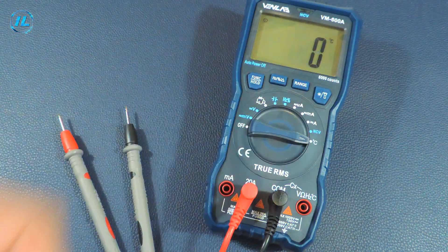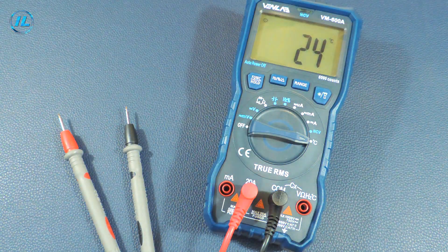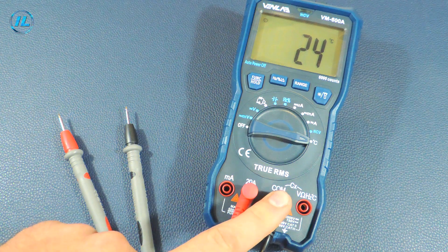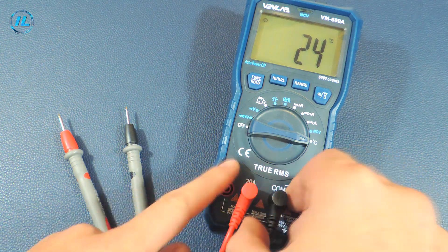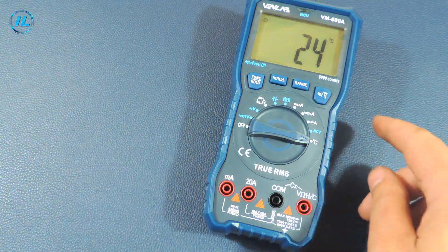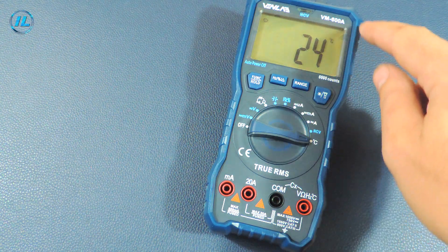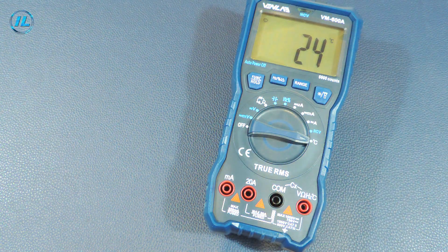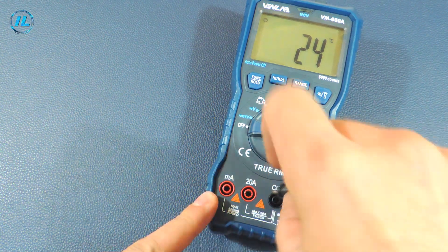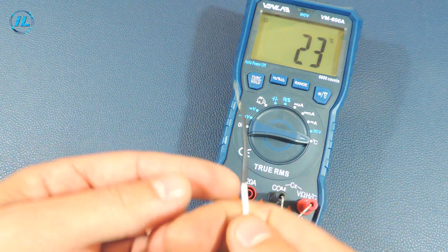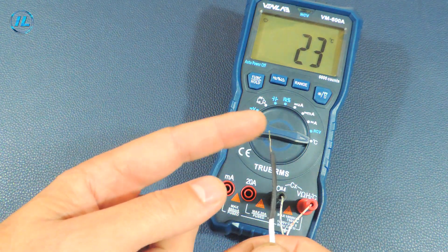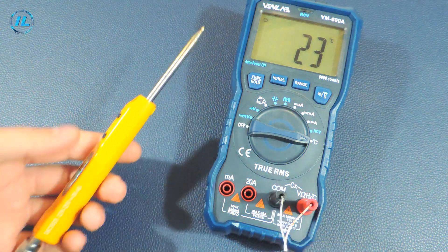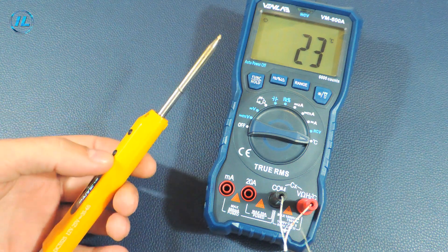Great. And the last mode is temperature measurement. Now I will install a thermocouple instead of probes. By the way, without a thermocouple the device shows the temperature inside the case. There is also a temperature sensor installed there. But when the thermocouple is connected the readings come from it. For example, I measure the temperature of the soldering iron tip.